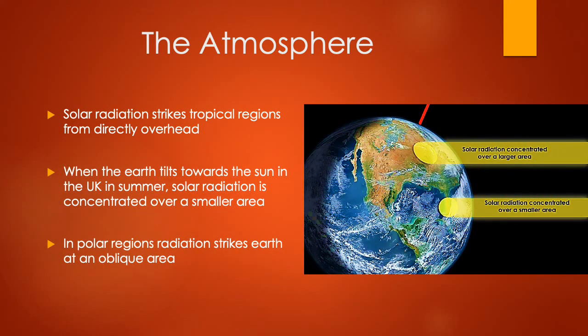Depending on geographically where you are in the world, this solar radiation strikes at different angles. Over tropical regions it's going to strike directly overhead. But because the Earth is on a tilt, this solar radiation hits the Earth at an angle, so it's a more concentrated area where the solar radiation is emitted and therefore smaller. Near the tropical areas it's the greatest amount of concentration. As we get further away from these tropical areas towards the poles, the area gets smaller and therefore the least concentration as well.